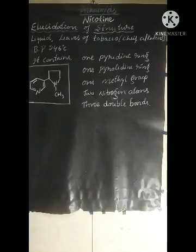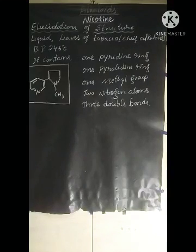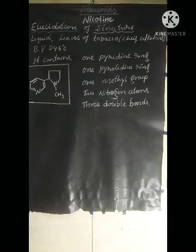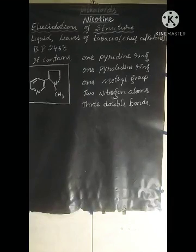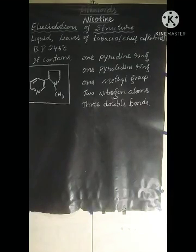Hi everyone. In the previous class, we discussed about alkaloids — introduction, occurrence, and extraction of alkaloids from a plant source. Now, in this class, we will discuss about the structural elucidation, or elucidation of structure, of nicotine. First of all, elucidation means explanation — clarified explanation is one of the definitions of elucidation.